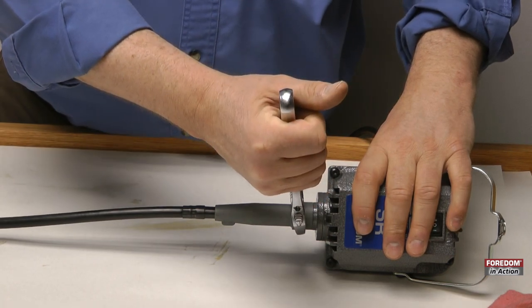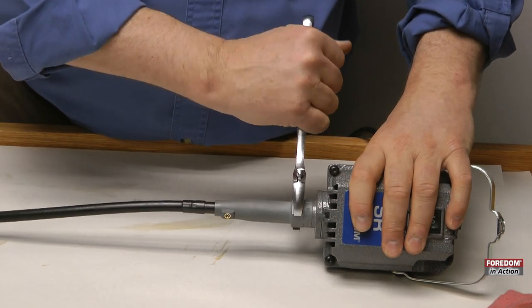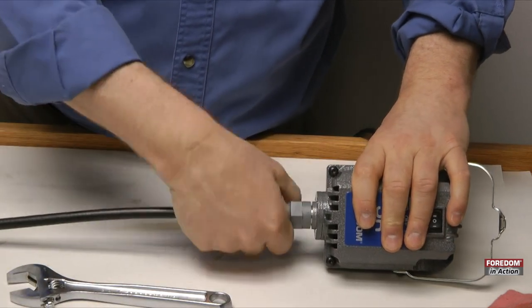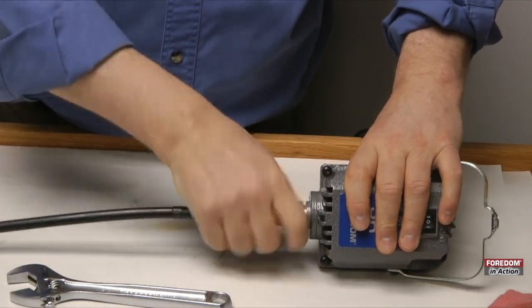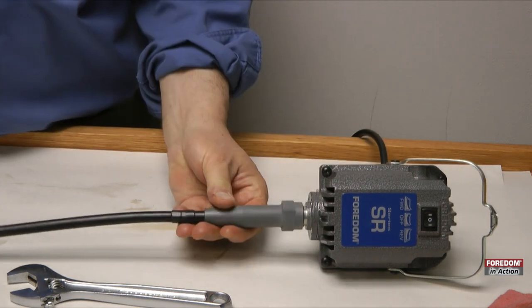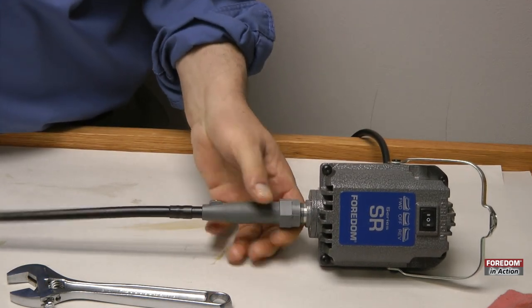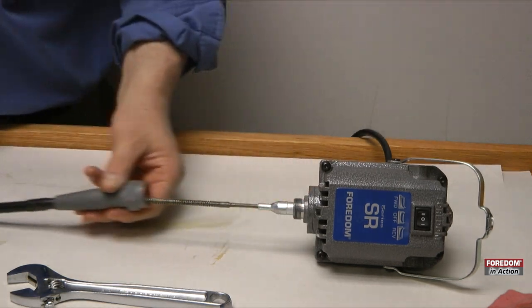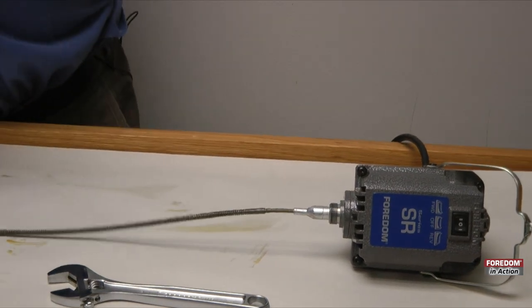Remember, it's a left-handed thread, not a right-handed thread, so it goes just the opposite way. Once you loosen it, take it off by hand. You do not need to remove the sheath for this if you're not replacing the sheath.